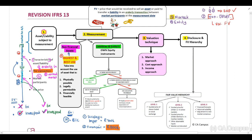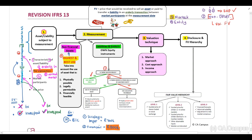What happens if it is liabilities and the entity's own equity instruments? First, ask: are there quoted prices in an active market? If yes, you can use those prices. If no, ask: is there an identical item held as an asset by another party? If yes, use the fair value of the identical asset, adjusting the quoted price only if factors specific to the asset but not to the liability or own equity are present. If no, you need to use a valuation technique to determine the fair value.